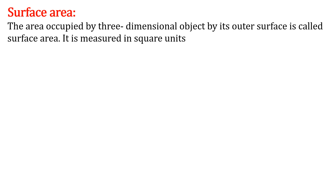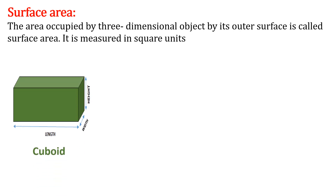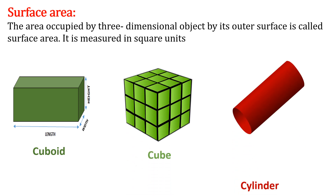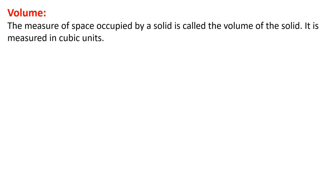Examples of three-dimensional objects are cuboid, cube, cylinder, sphere, etc. In your syllabus we'll learn about cuboid, cube, and cylinder — these are three-dimensional objects where you have length, breadth, and height. Now, what is volume? The measure of space occupied by a solid is called the volume of the solid. It is measured in cubic units.